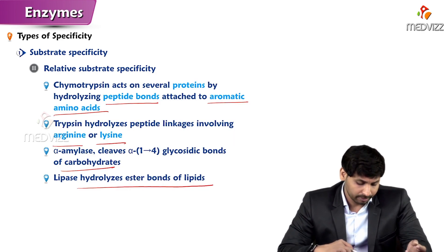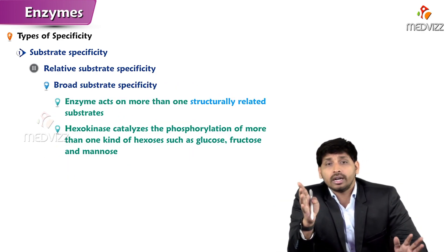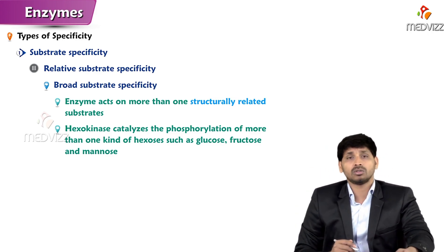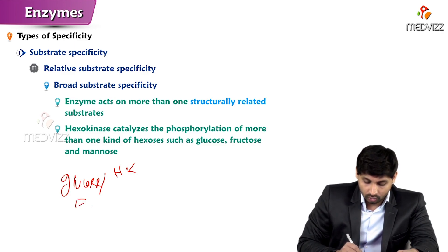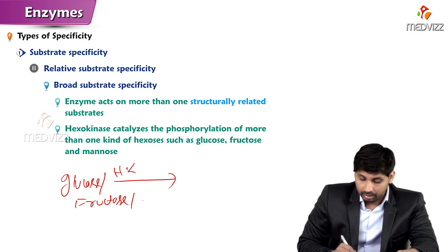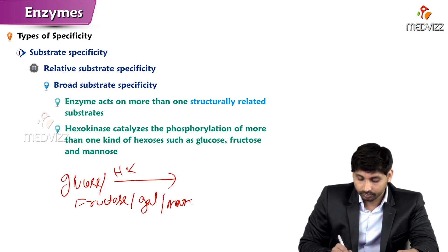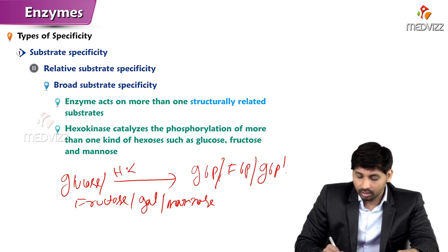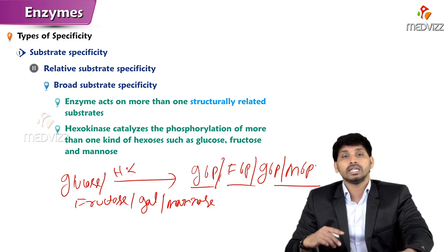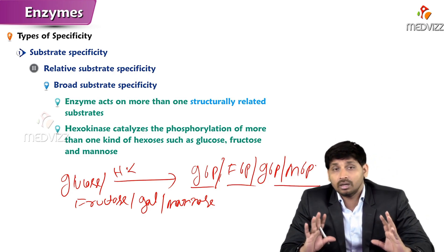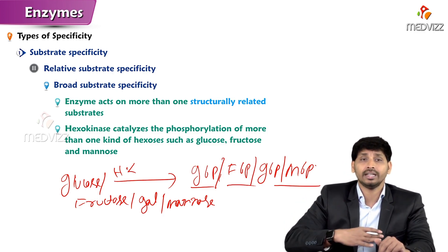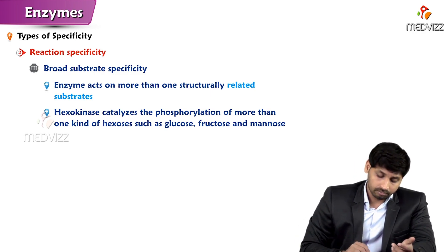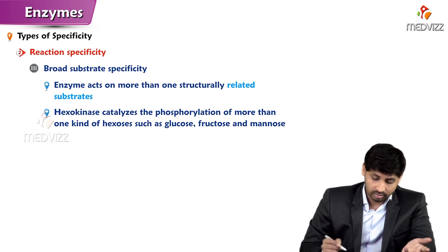Broad substrate specificity means enzymes act on more than one structurally related substrate. Hexokinase can phosphorylate not only glucose but also fructose, galactose, and mannose, producing glucose 6-phosphate, fructose 6-phosphate, galactose 6-phosphate, or mannose 6-phosphate respectively. Glucose, fructose, galactose, and mannose are all hexoses — they all carry 6 carbons in their structure.